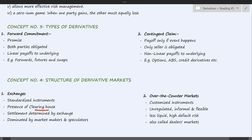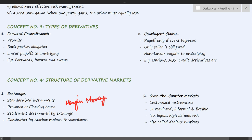On exchanges, transactions are made through a clearing house. The buyer makes payment to the clearing house and the seller receives payment from it, so it acts as a middleman. The clearing house offers a credit guarantee by requiring both parties to deposit margin money for every transaction. This ensures fewer defaults in the market, which is a major advantage of exchange-based markets.